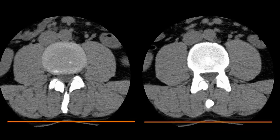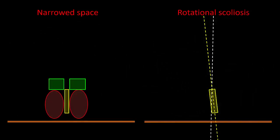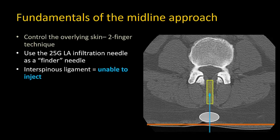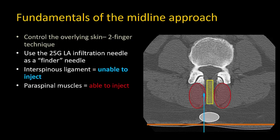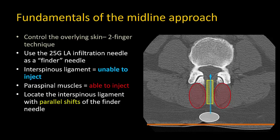In patients with degenerative changes, there are narrowed spaces due to prominent and hypertrophied articular processes, and a degree of scoliosis is also not uncommon, making the true neuraxial midline and needle trajectory even harder to discern. It is therefore very useful to use the small-gauge local anesthetic infiltration needle to explore the underlying anatomy. Entry into the interspinous ligament is signaled by an inability to inject, whereas local anesthetic can still be injected if the needle is in the adjacent paraspinal muscles. In that case, medial or lateral parallel shifts should be made — do not angle the needle.